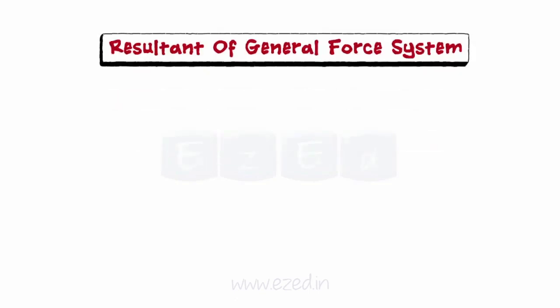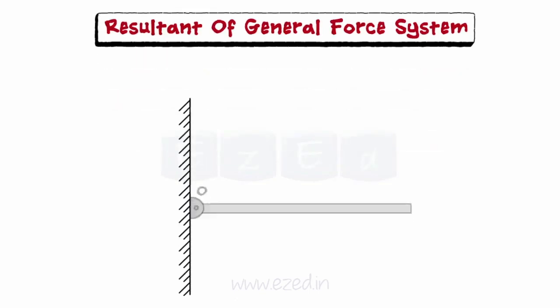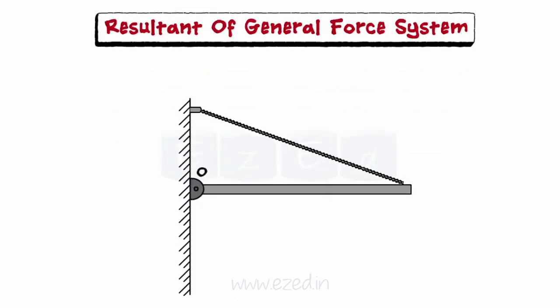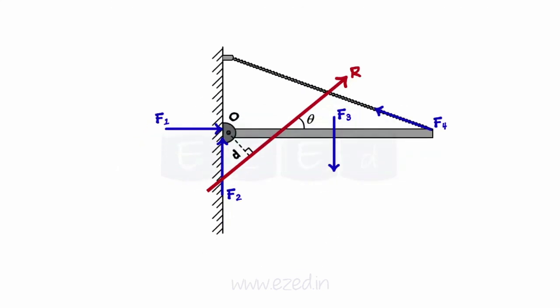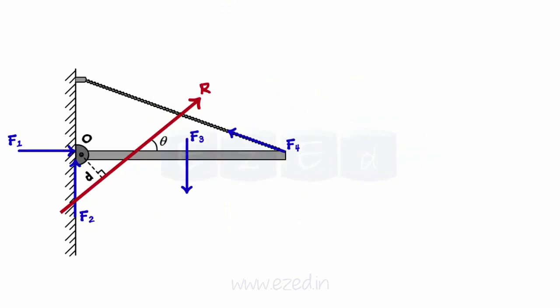In a general force system, coplanar forces are neither meeting at a single point, nor are parallel to each other. The resultant of such a force system is defined according to magnitude, inclination, and position. The steps used to find the resultant of a general force system are as follows.